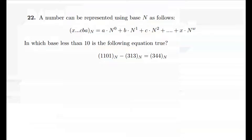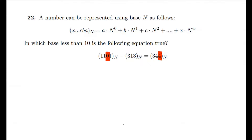A number can be represented using base n as follows. In which base less than 10 is the following equation true? The first thing to note is that in the equation we're given in base n, the smallest number is zero and the largest number is four, which means that in this base at least the numbers from zero to four are used. So n must be larger than or equal to five, and since the base is less than 10, n must satisfy this inequality.